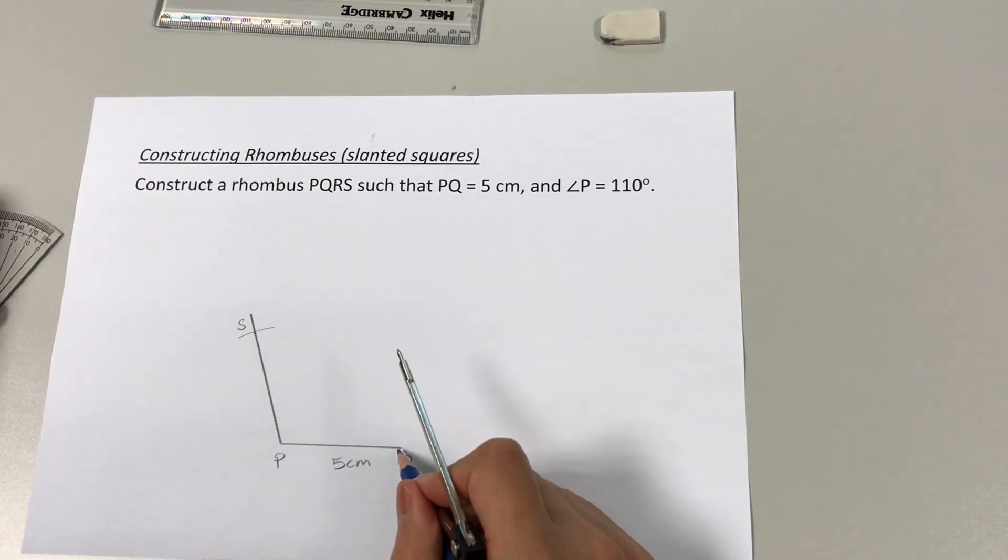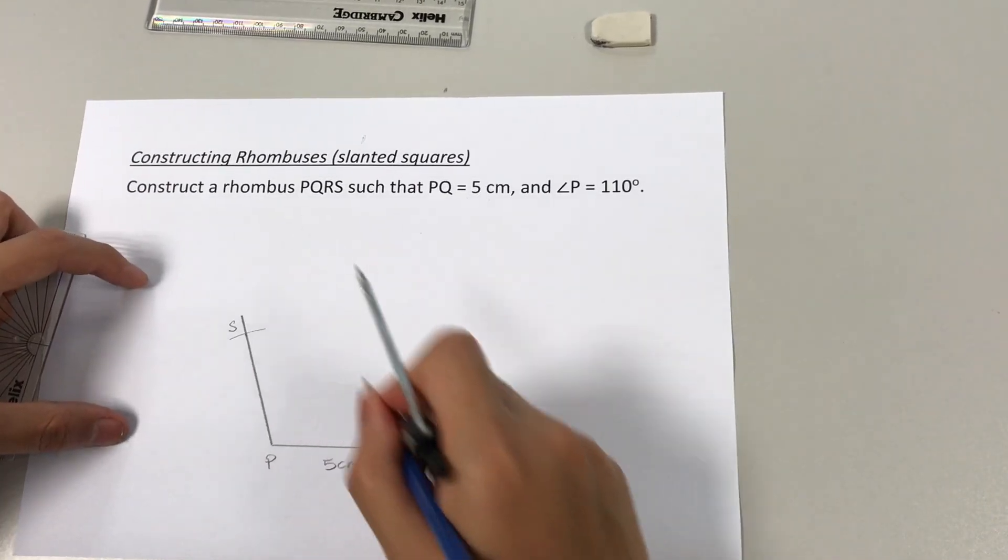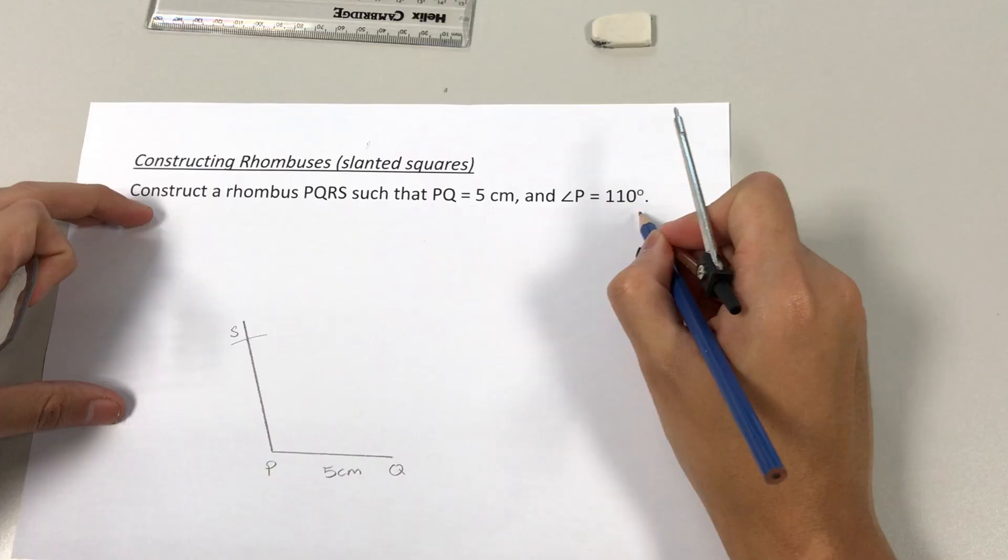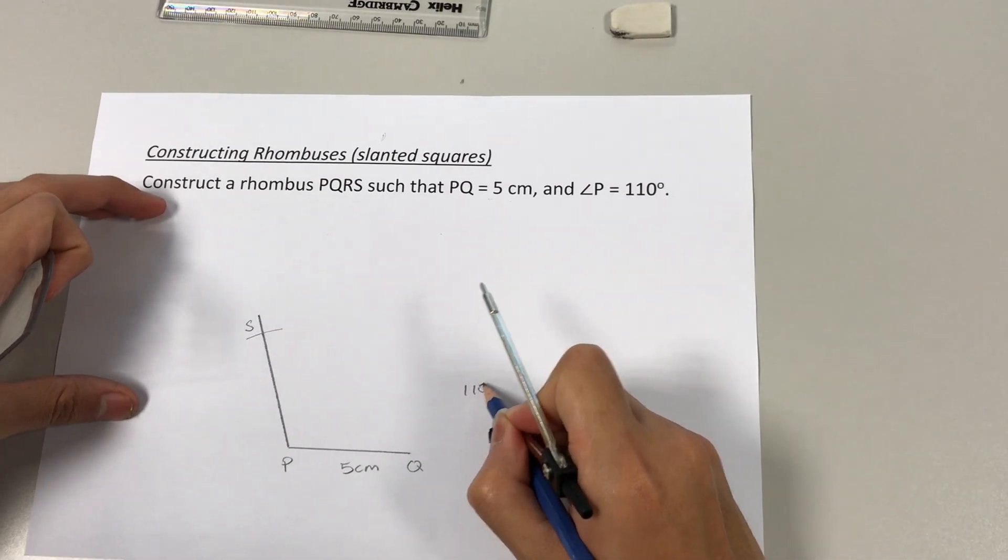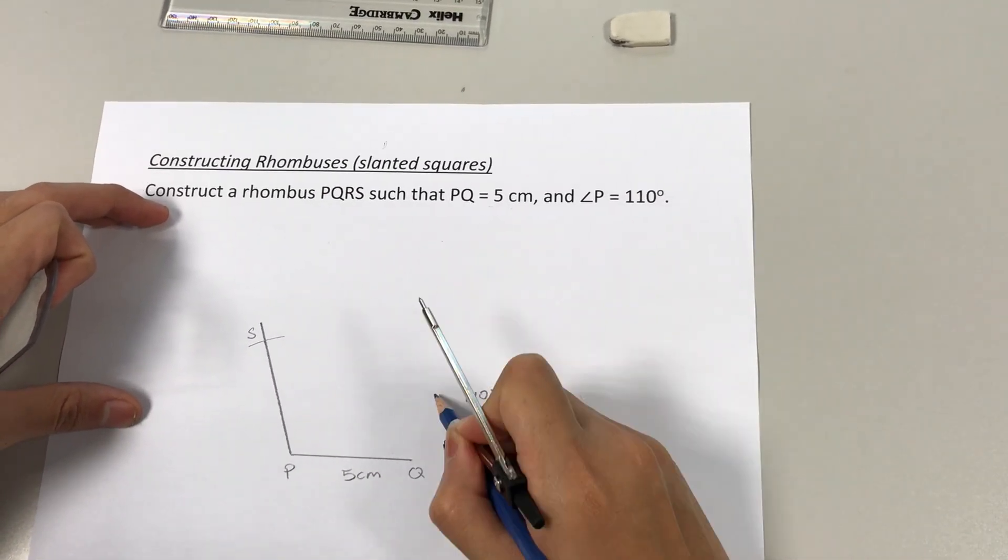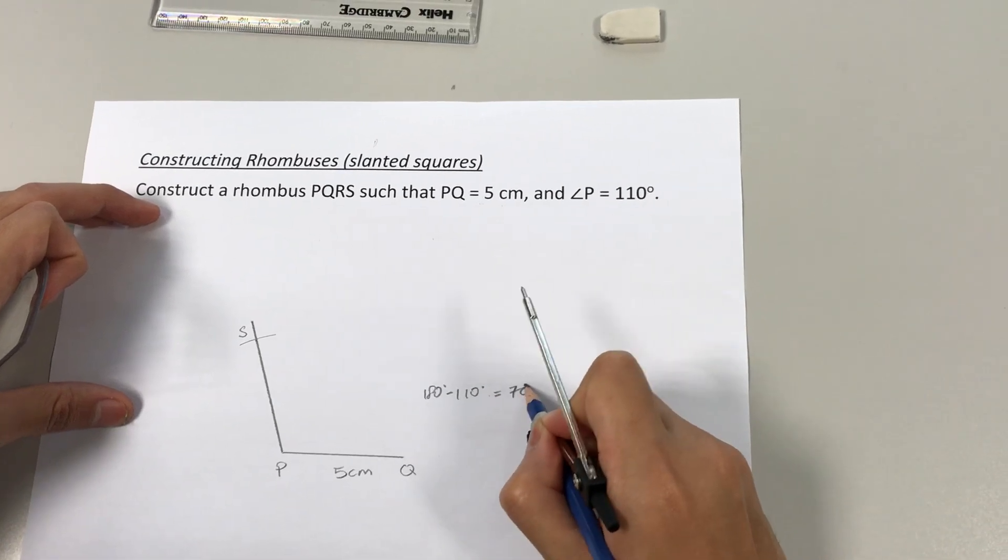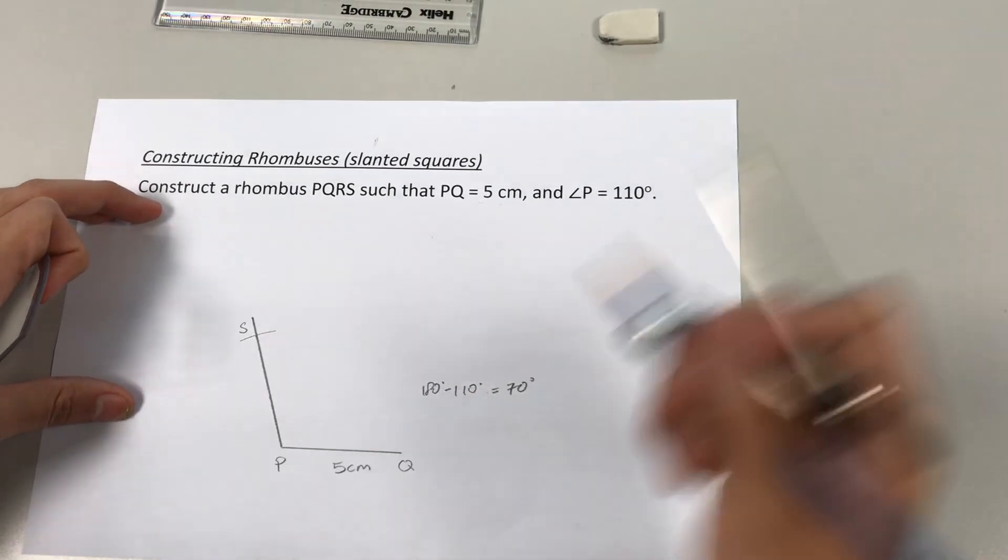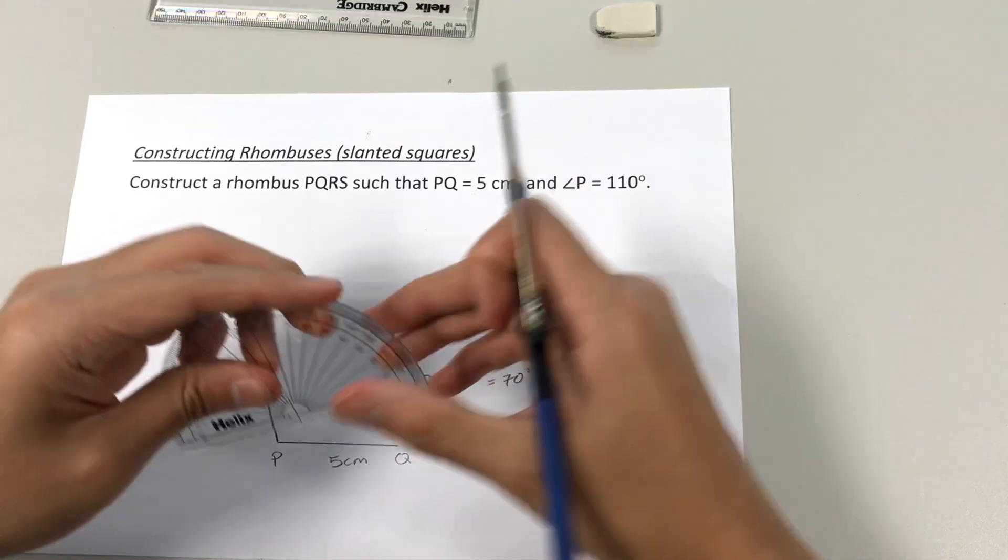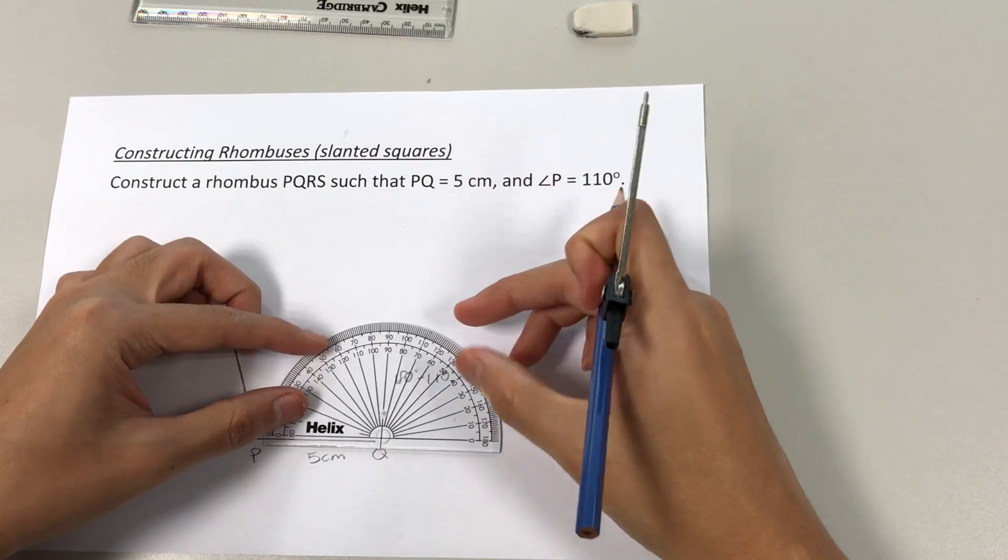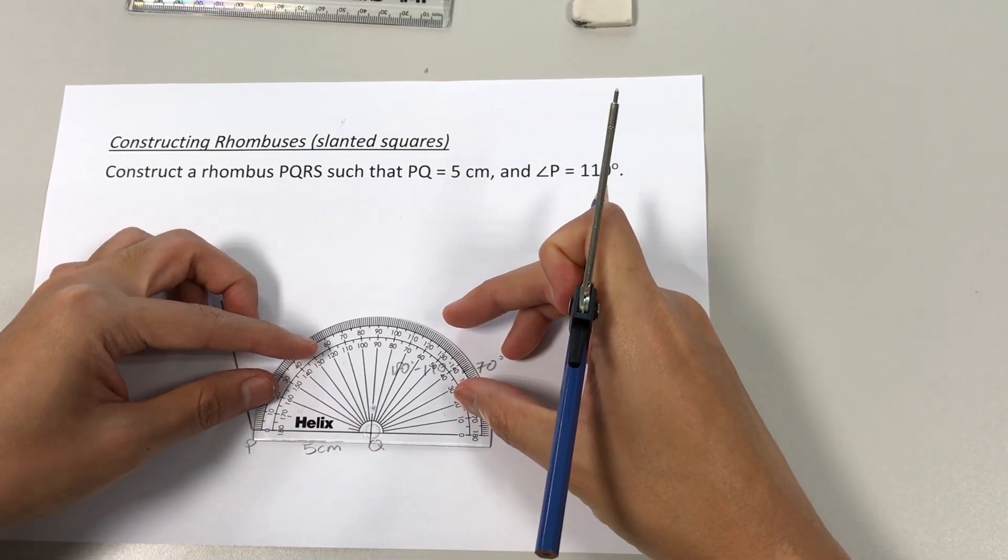All right, so next, for PQ, we want to find another angle. In this case, we do not mark out 110. We'll mark out 180 minus 110, which is 70 degrees. We'll mark out a 70 degree angle at point Q. Similarly, we put our protractor at point Q.